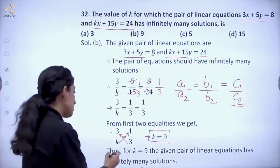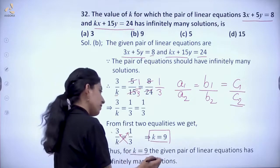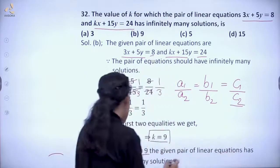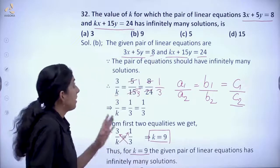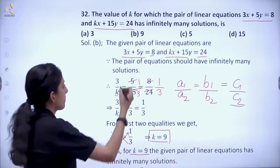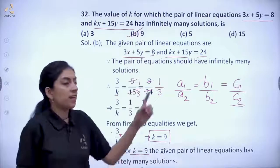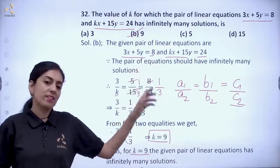Thus, for k = 9, the given pair of linear equations has infinitely many solutions. Hence, b is the correct option. Thank you.